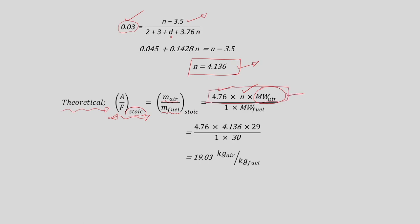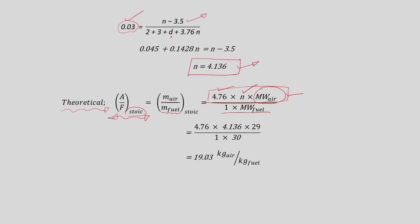The mass of air divided by mass of fuel: considering 1 mole of fuel (C2H6) with molecular weight 30, so 1×30 gives the mass of fuel. Calculating this value gives approximately 19.03 kg of air per kg of fuel for the complete combustion of C2H6 to produce CO2 and H2O, along with 3 mole percent oxygen and nitrogen.